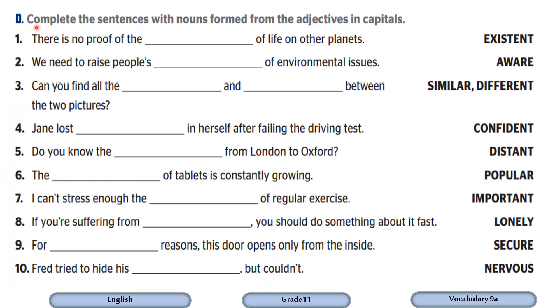Now let's practice adding suffixes to other new words. We are going to complete sentences in exercise D with nouns formed from the adjectives in capitals. So, these are the adjectives, but first of all, let's check if we can identify the meaning of each word.